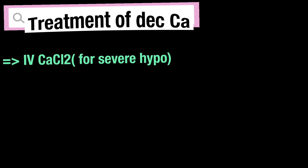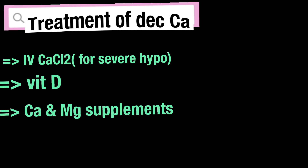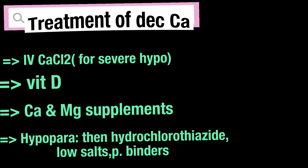Treatment of hypocalcemia depends upon the severity. If the hypocalcemia is severe, then intravenous calcium chloride is recommended. If it is not severe, then vitamin D, calcium, and magnesium supplements are recommended. If the hypocalcemia is due to hypoparathyroidism, then hydrochlorothiazide, salt restriction, and phosphate binders are recommended.